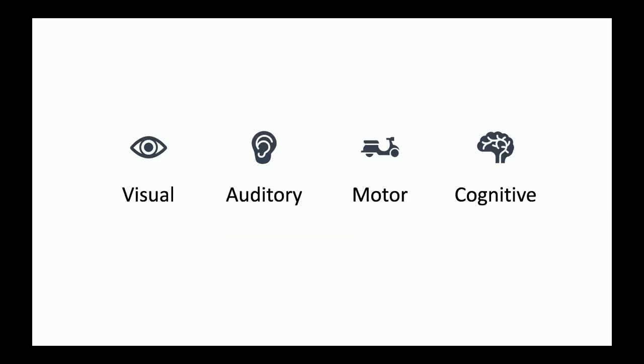The types of accessible needs fall into four general categories: visual, auditory, motor, and cognitive. The bulk of your work as a developer is going to be in the visual area because the web is very largely visual, but there are things to consider for the other three as well.